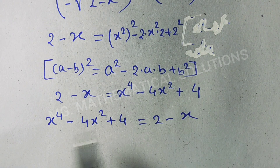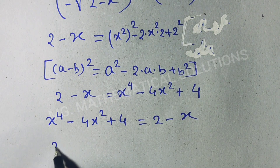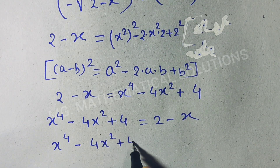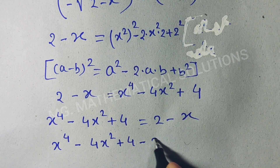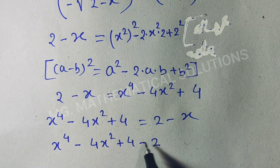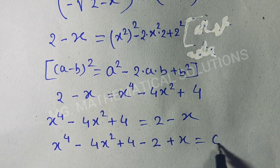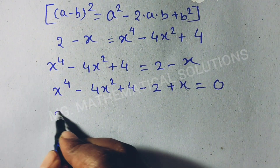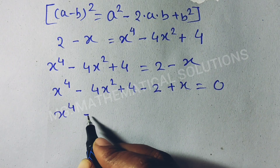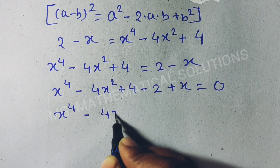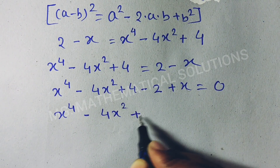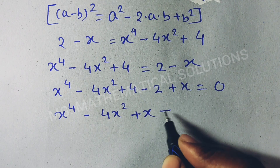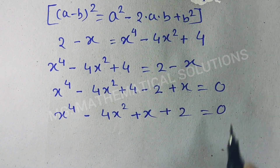Now we move all terms to the left side. So: x to the power 4 minus 4x squared plus 4 minus 2, and bringing minus x to the left gives plus x, equal to 0. Simplifying: x to the power 4 minus 4x squared plus x plus 2 equal to 0.